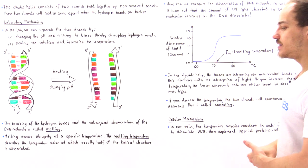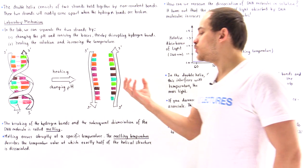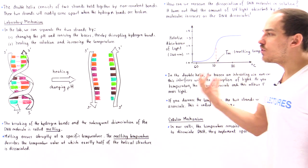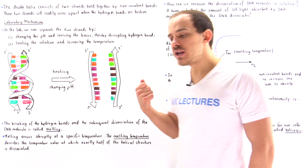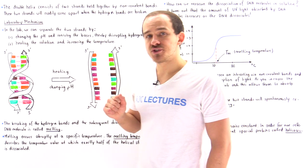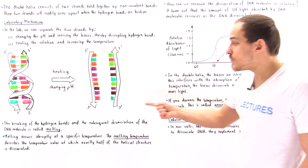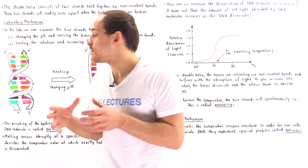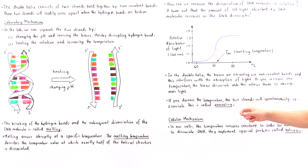If we heat our solution of DNA to 80 degrees Celsius, all the DNA molecules in our solution will be dissociated. But if we bring the temperature back down to, say, 60 degrees Celsius, those individual strands of DNA will begin to reassociate and form the double helix structure again. This process is known as annealing, and it will become important when we discuss the hybridization process of DNA.